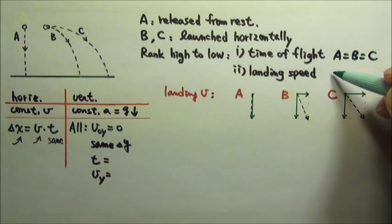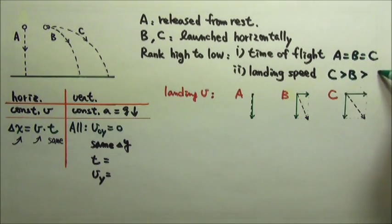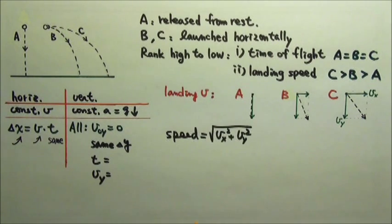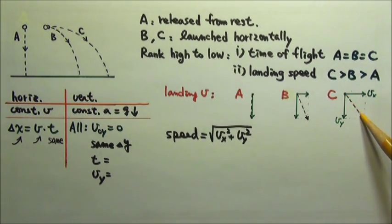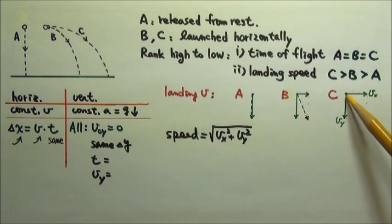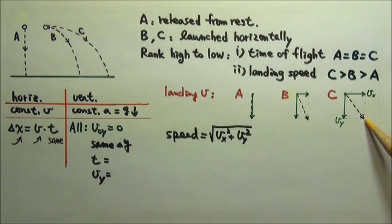So C has the largest landing speed, and then B, and then A. Or we can use Pythagorean theorem to find speed. Speed is the diagonal, so it is the square root of A squared plus B squared.